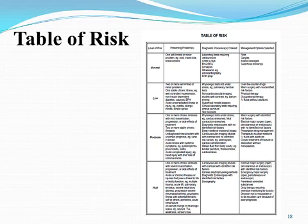Looking at the presenting problem column: think about your Medicare population dealing with multiple comorbidities. They tend to fall into the moderate category. Under moderate: one or more chronic illnesses with mild exacerbation, progression, or side effects of treatment; two or more stable chronic illnesses; an undiagnosed new problem with uncertain prognosis; an acute illness with systemic symptoms like colitis or pyelonephritis; or an acute complicated injury such as a head injury with brief loss of consciousness.